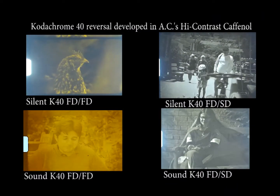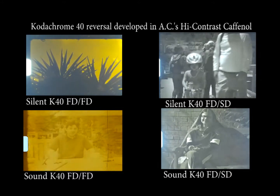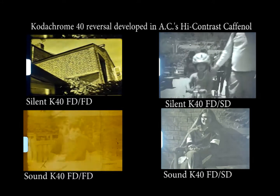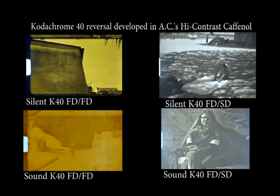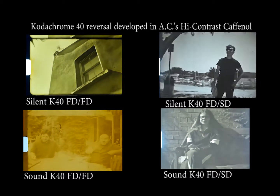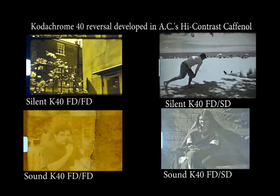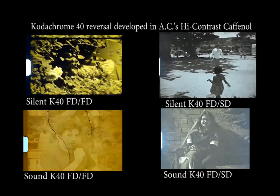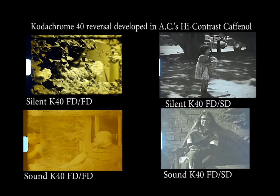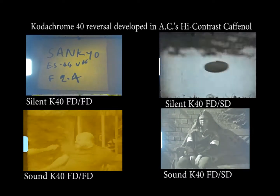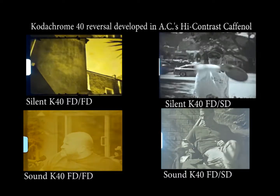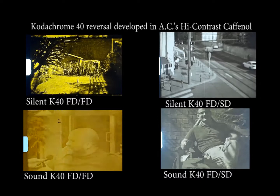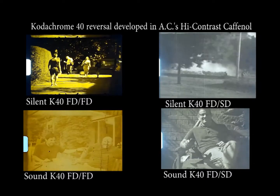One other thing: Kodachrome 40 silent film comes out a lot better than Kodachrome 40 sound film. I used exactly the same process for both — the only difference is silent versus sound film. Sound film generally looks a lot worse: lower contrast, grainy, washed out, which leads me to suspect that Kodachrome 40 sound film has a thinner or different emulsion.